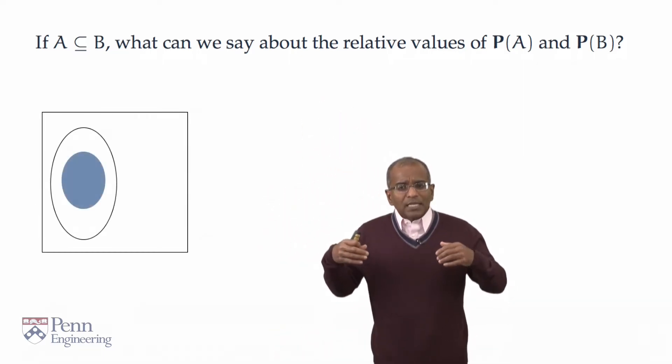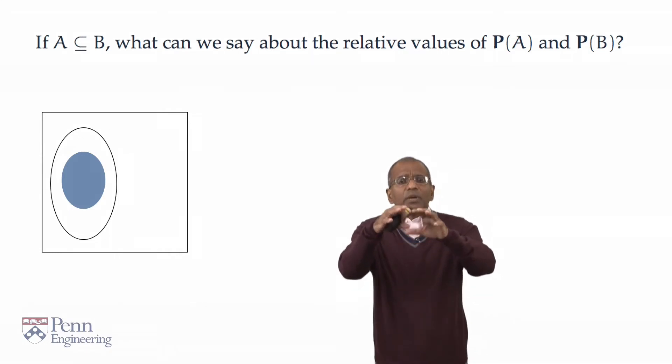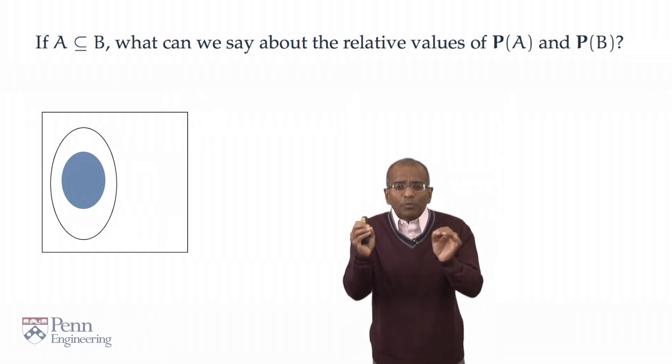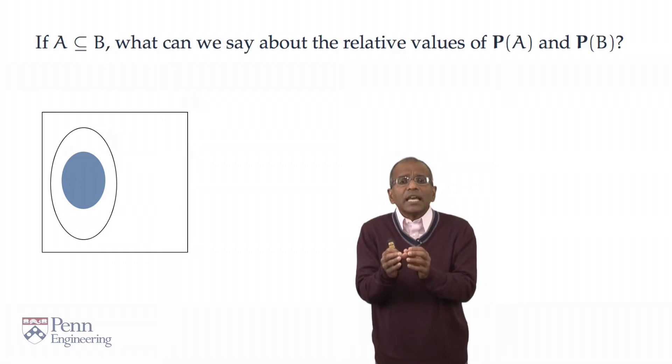Naturally enough, we want to say that A has got a smaller probability than B. To begin, let's look at a picture. A picture is always useful to clarify objects. Imagine a sample space, an event B, and an event A safely ensconced inside B.